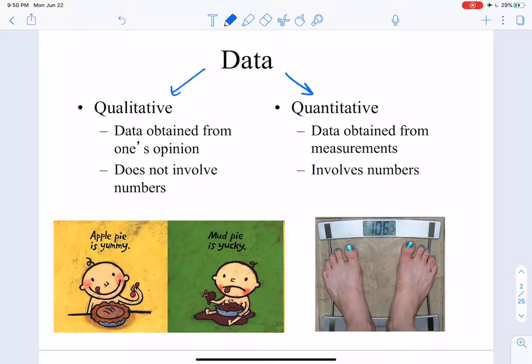Qualitative data is pretty much somebody's opinion and it doesn't involve numbers. So if you look down here, you see that this little baby says that apple pie is yummy and mud pie is yucky. Another baby could come along and think mud pie is yummy and apple pie is yucky. So that's pretty much just an opinion. Qualitative data is data like color, taste, smell, or a yes or a no.